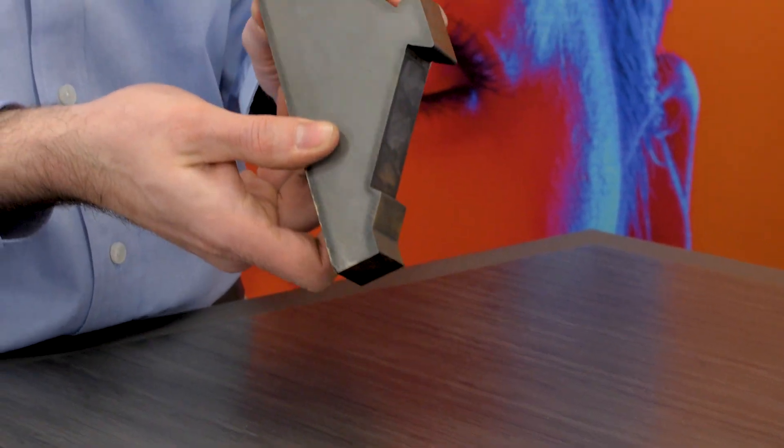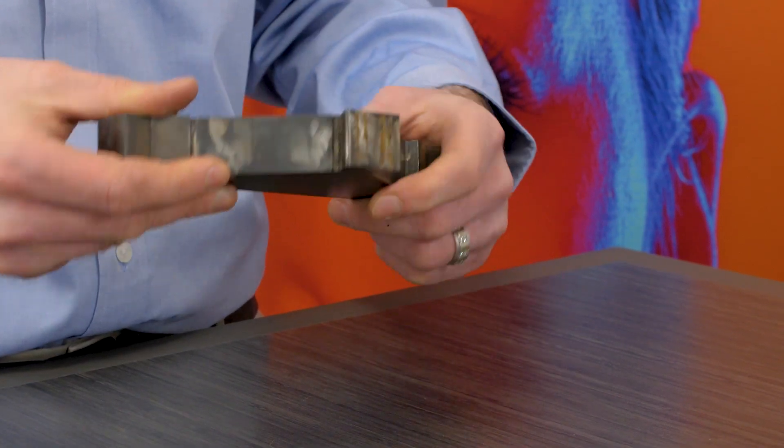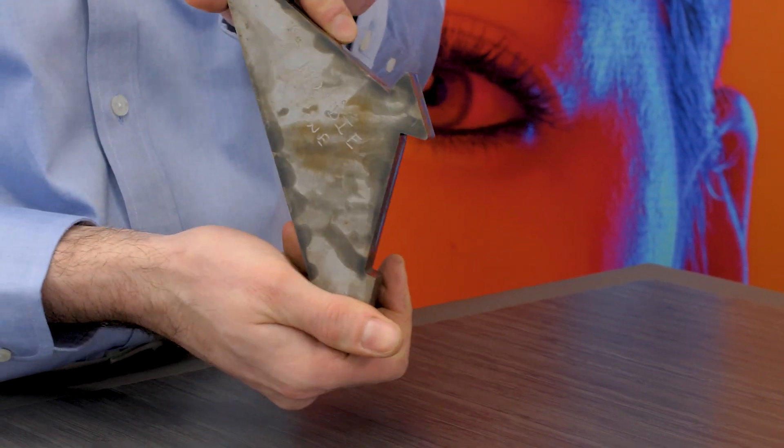So in an application like a tapered roller bearing, where you see both axial and radial loading, it works really well.